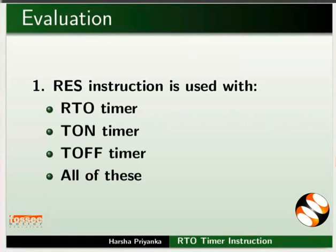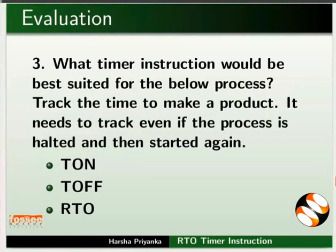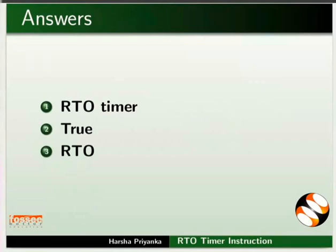Here are some self-assessment questions for you. First, reset instruction is used with: RTO timer, TON timer, TOF timer, or all of these? Second, an RTO timer retains the present accumulated value when the rung goes false — true or false? Third, what timer instruction would be best suited for tracking the time to make a product, even if the process is halted and then started again? The options are TON, TOF, or RTO. The answer to the first question is RTO timer. The answer to the second question is true. The answer to the third question is RTO.